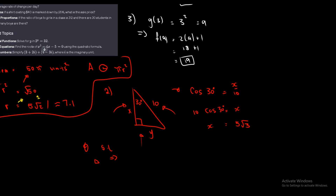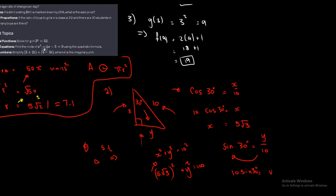For y, using Pythagoras: x squared plus y squared equals 10 squared, substituting 5√3 for x gives (5√3)² plus y² equals 100. Alternatively, using a trig ratio — since y is opposite the 30° angle, sine 30 equals y over 10, so y equals 10 sine 30, which gives 5. So the two side lengths are 5√3 and 5.